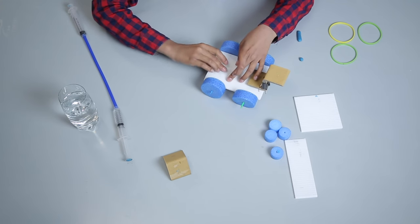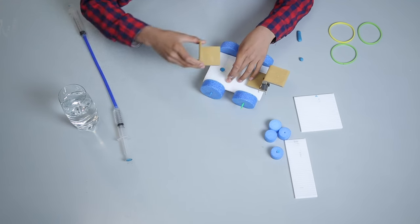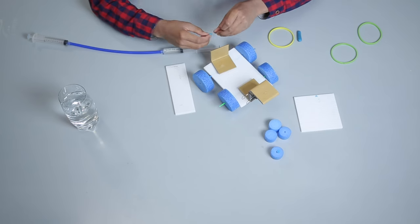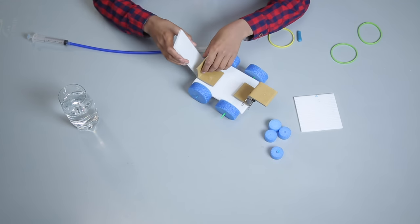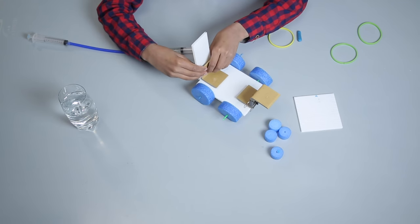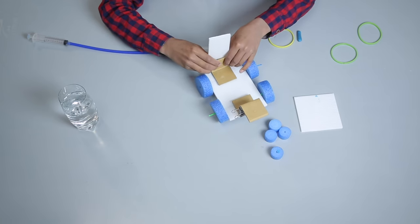Now, on the other side of Corflute attach cardboard angle with the help of sticky tack. On this cardboard angle, attach another Corflute vertically using sticky tack.